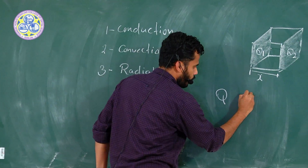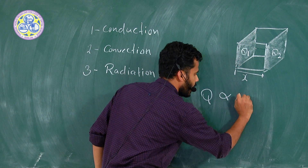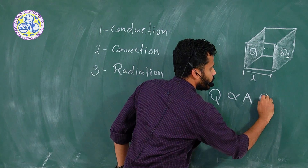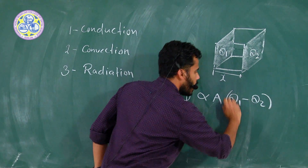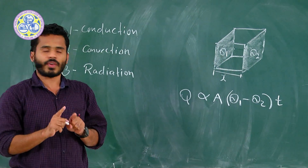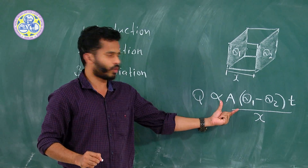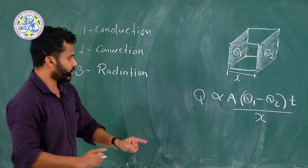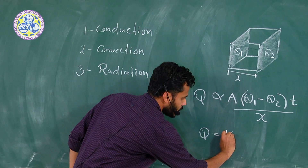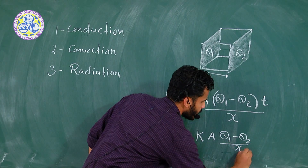The amount of heat transferring is always proportional to the area of cross section A, the temperature difference theta 1 minus theta 2, and the time of flow. It is inversely proportional to the distance of separation X. So these four factors — area of cross section, temperature difference, time, and distance — affect the amount of heat flow. This equation can be written as Q = k × A × (theta 1 − theta 2) × t / X.